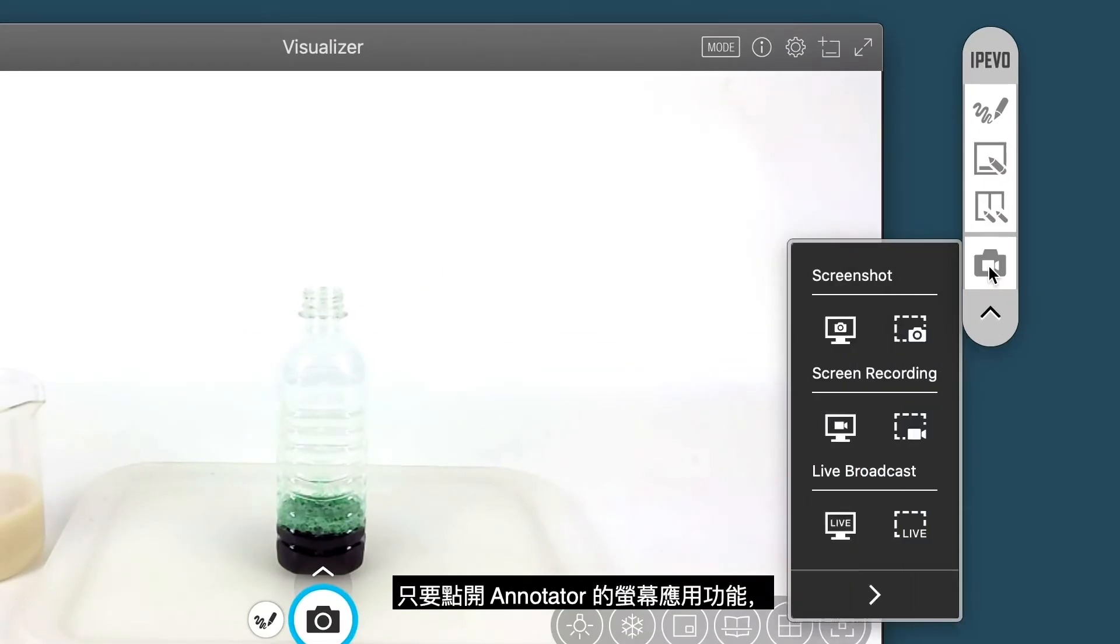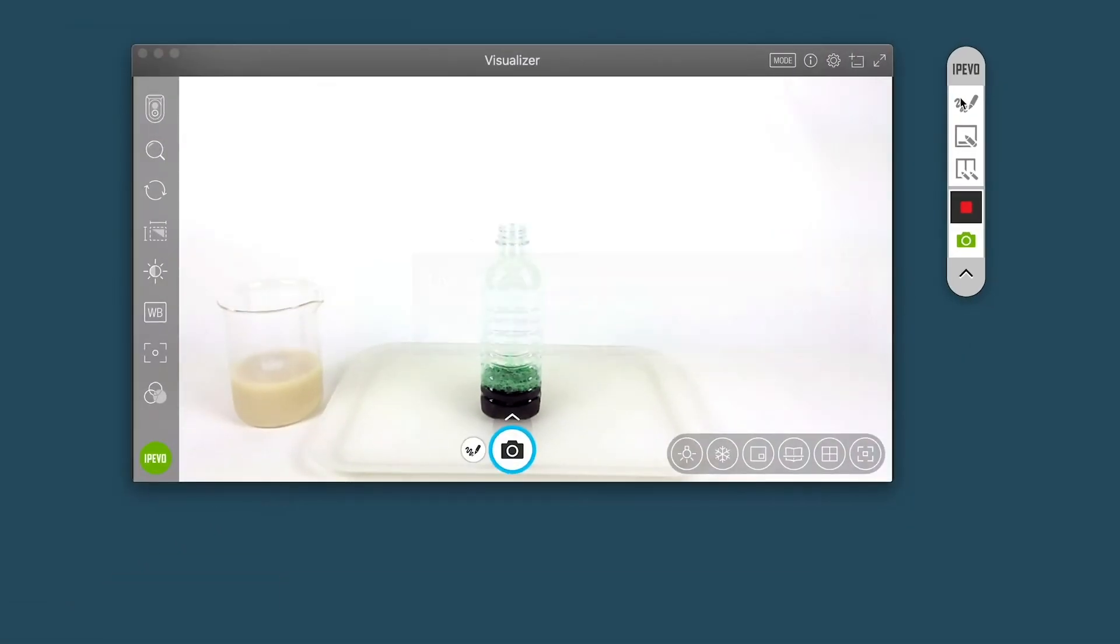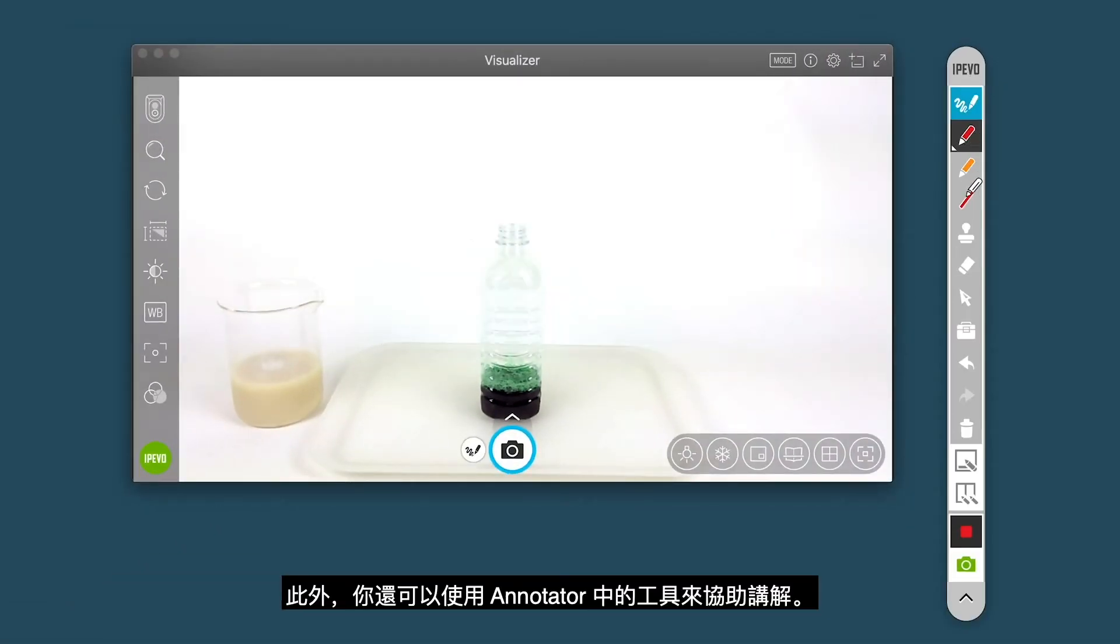Open the capture options inside of Annotator, and if you have a live broadcast set up, you can start a live stream, then continue to use any of the tools included inside of Annotator.